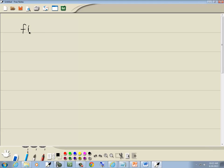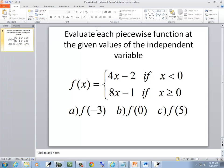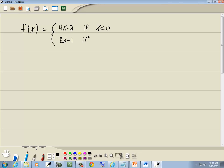We've got f(x) equals 4x minus 2 if x is less than 0, and 8x minus 1 if x is greater than or equal to 0.